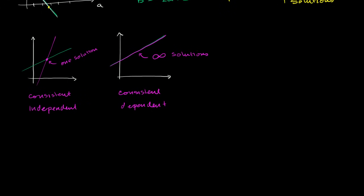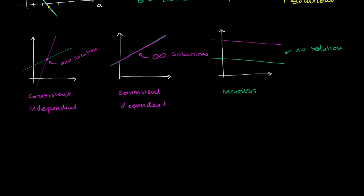The last scenario, when you're dealing in two dimensions, is where your two constraints just don't intersect with each other. One might look like this and the other like this — they have the exact same slope but different intercepts. So there is no solution; they never intersect. We call this an inconsistent system.